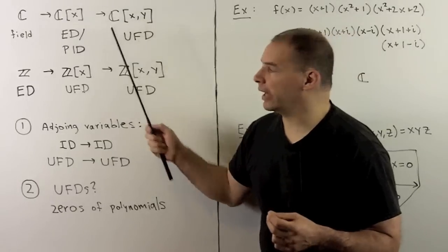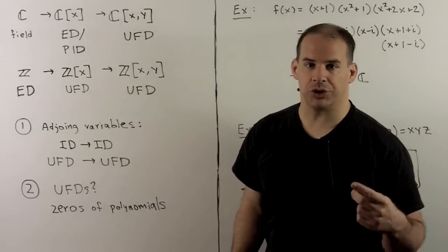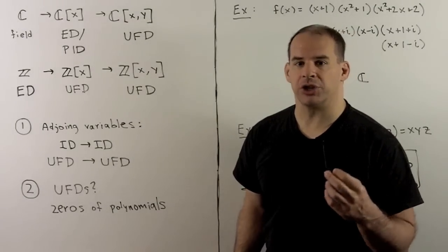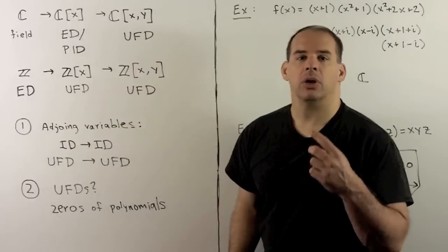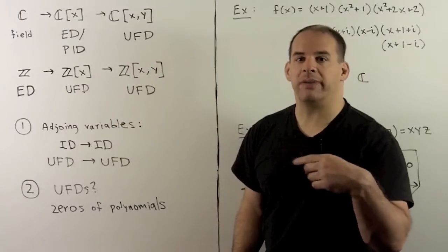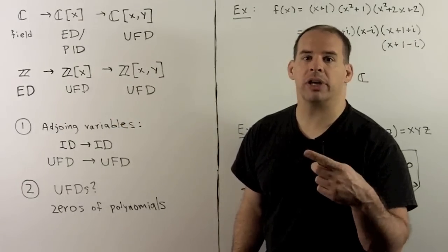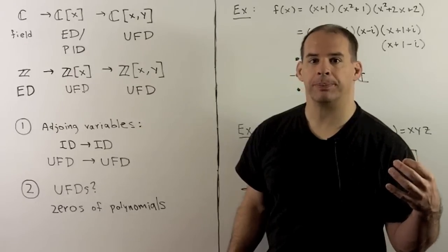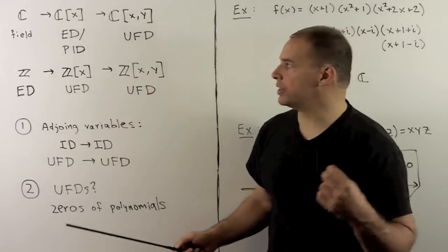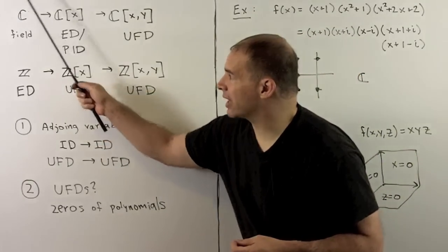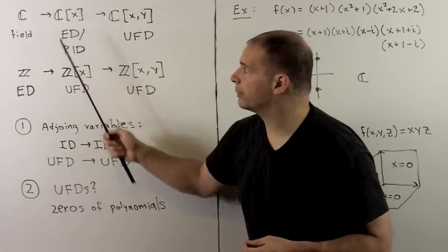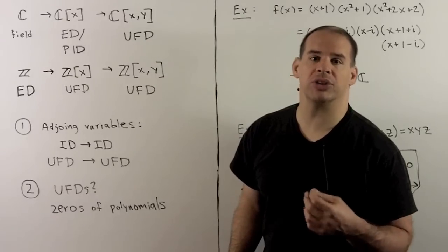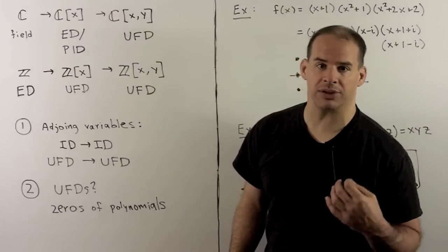To motivate, we start with two pictures. For the first picture, we're going to take rings, adjoin variables to form polynomial rings, and then we'll see how we lose structure. For instance, if I start with a field — say the complex numbers — I'll adjoin a variable x, so I have polynomials in x over the complex numbers.